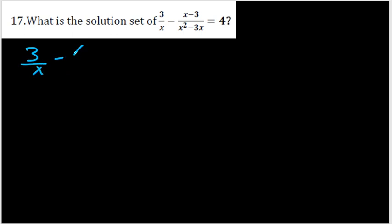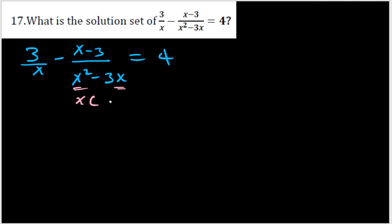Now we'll solve some questions on rational functions and complex numbers. The first question asks: what is the solution set of 3/x minus (x-3) over (x²-3x), equal to 4? Let's try to factorize the second rational function's denominator, since it can be simplified. We take out x as a common factor, and what remains is x minus 3.